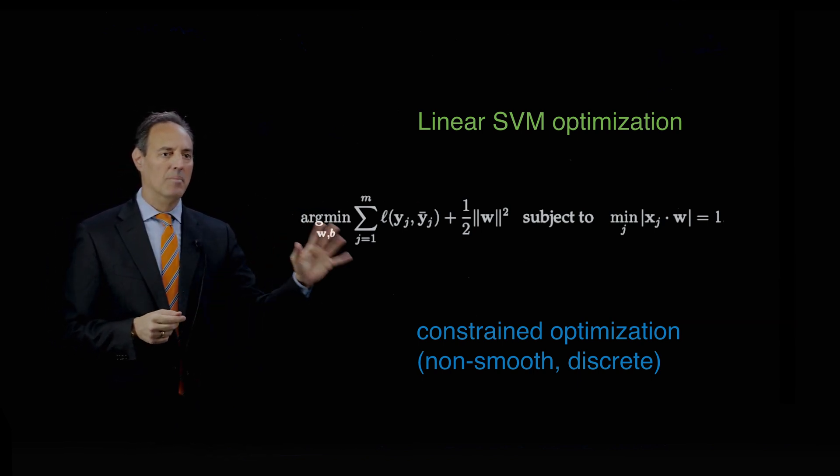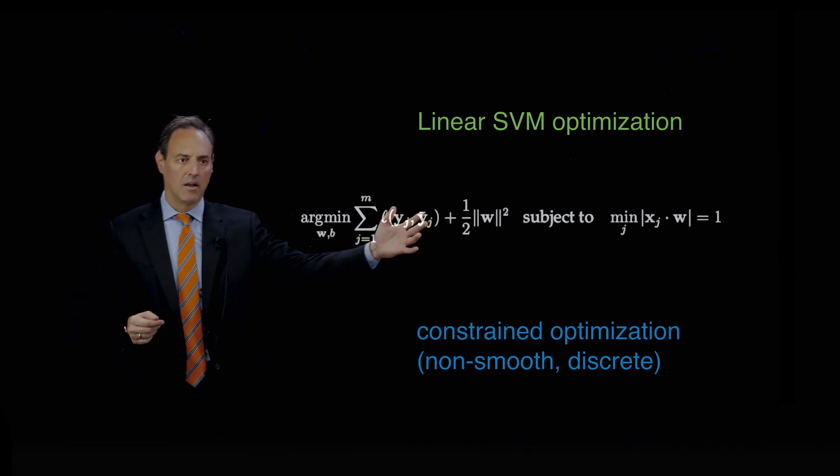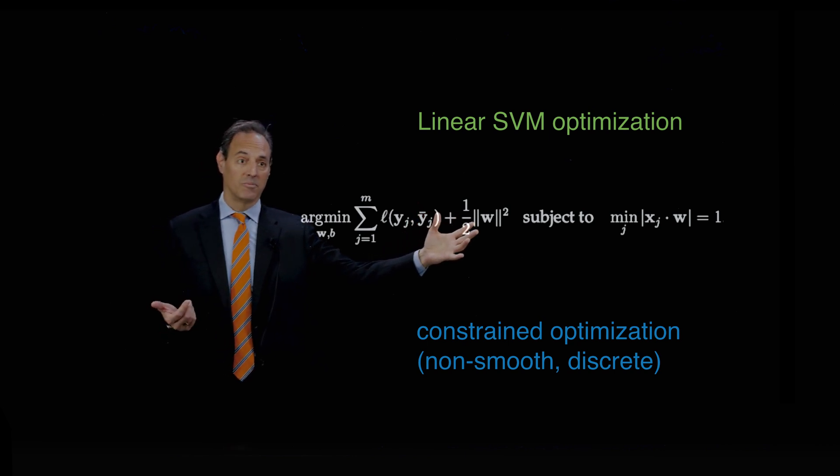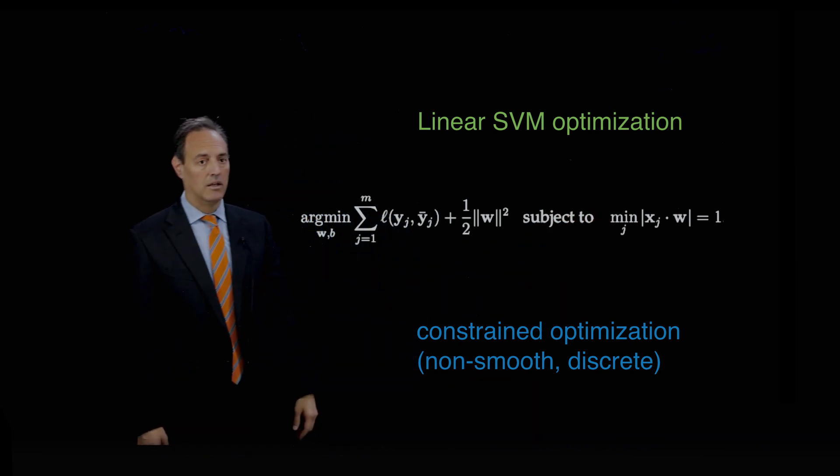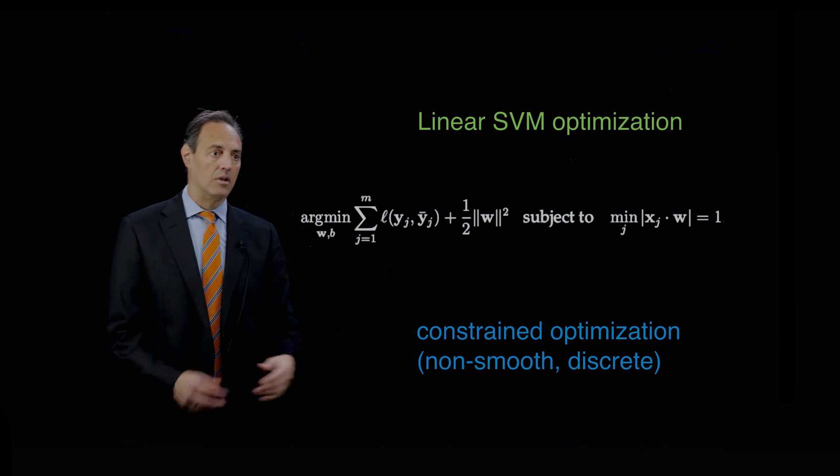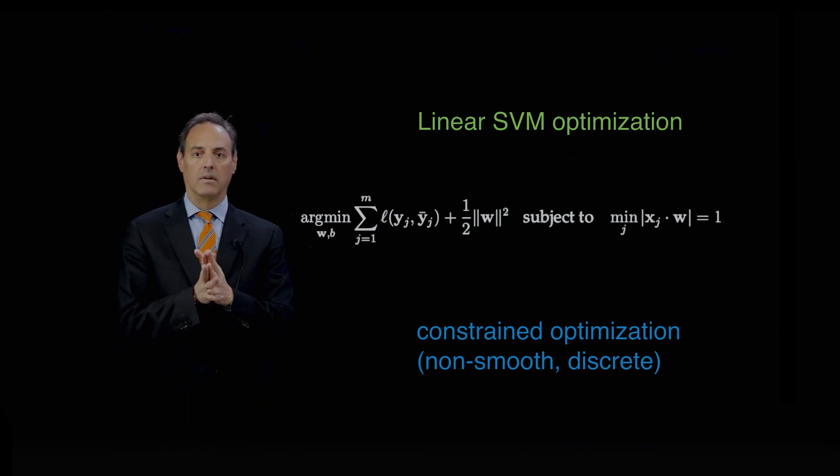We want to minimize over those losses. Here is the linear SVM optimization model: minimize this loss function with the norm of that W vector as well, subject to a constraint that the norm of W is one. This is your basic formulation of the support vector machine optimization, a constrained optimization.